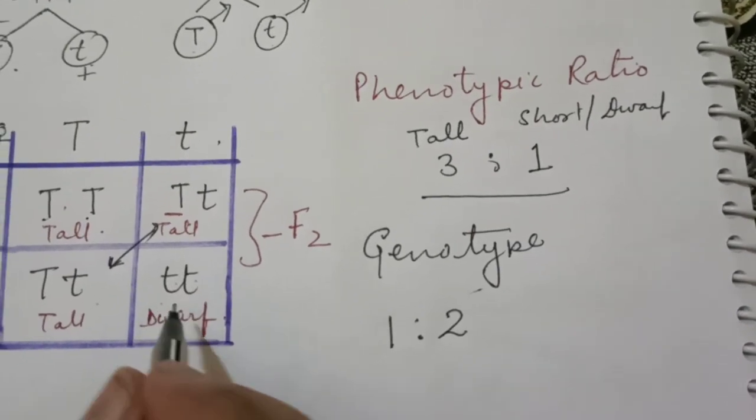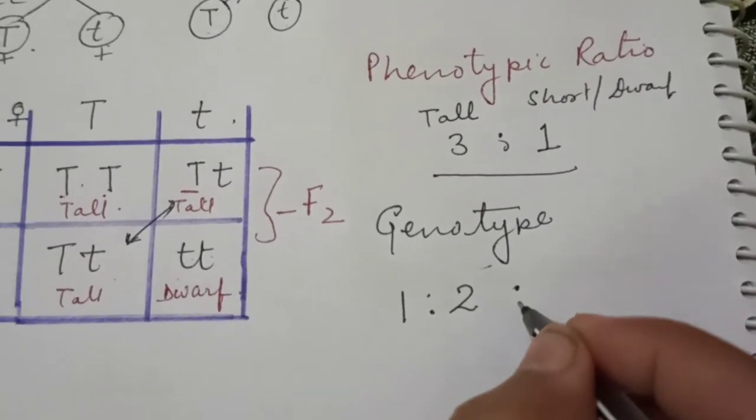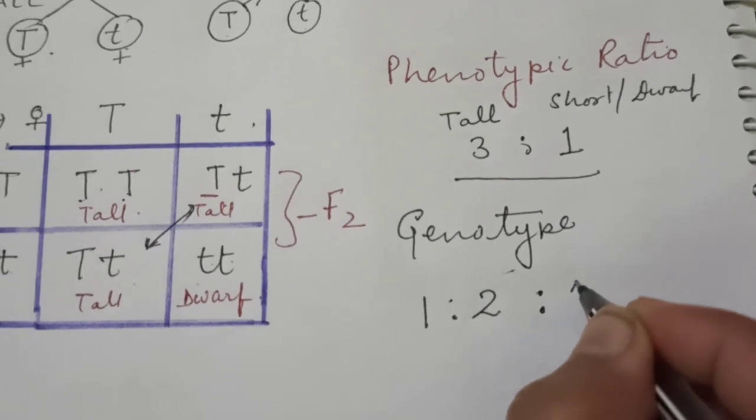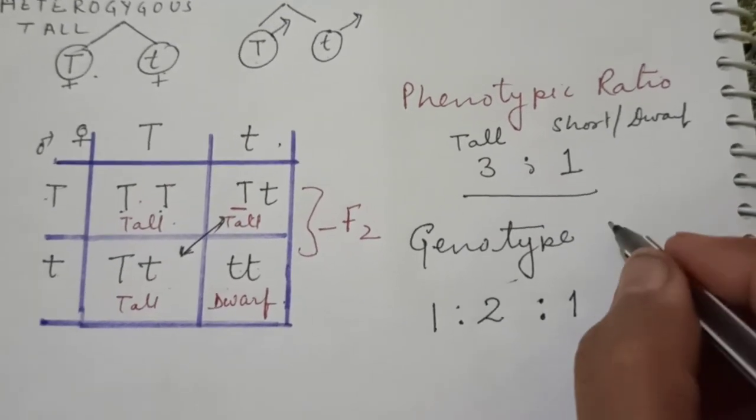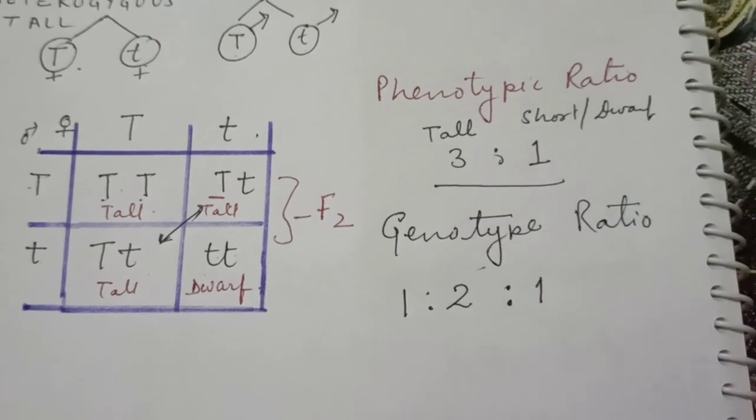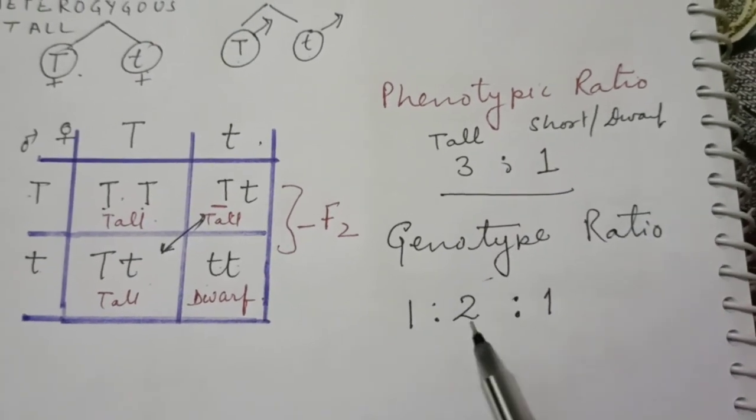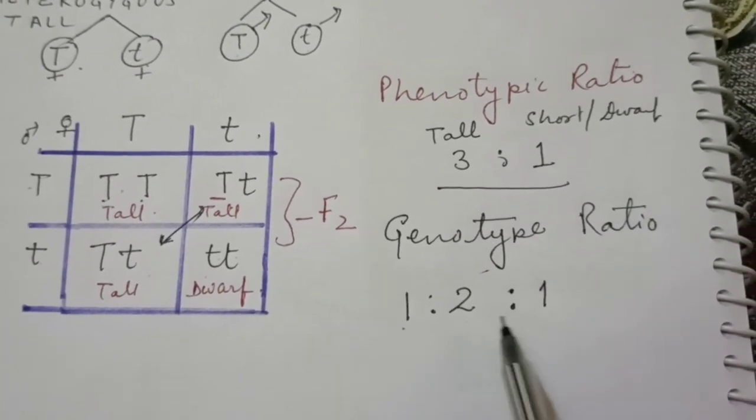And again the last one, this is small t and small t, this is the next genotype, so it is one. So the genotypic ratio for the same F2 generation in a monohybrid cross will be 1 raised to 2 raised to 1.